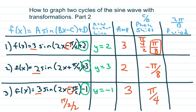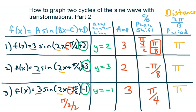Our period is 2 pi over b. Here's our b. In this case, all of our b's are 2, so 2 pi over 2 is just pi. And we just skip pi — this is kind of your distance that you're adding to your phase shift. The phase shift is like your starting point.